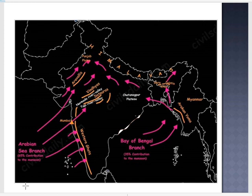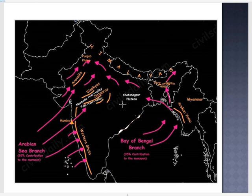Another branch of the Arabian Sea monsoon strikes the coast of Mumbai. This branch moves along the Narmada and Tapti river valleys and causes rainfall in central India. The Chotanagpur Plateau gets 15 centimeters of rainfall from this branch, after which it enters the Ganga plain and mingles with the Bay of Bengal branch.